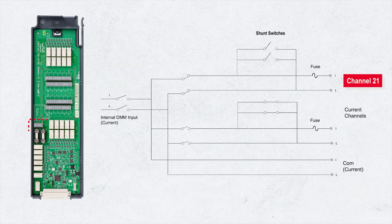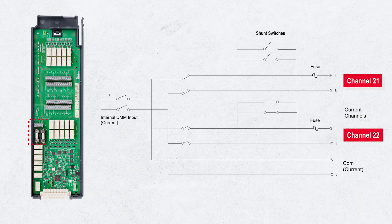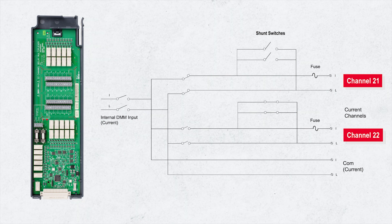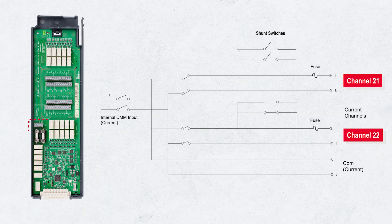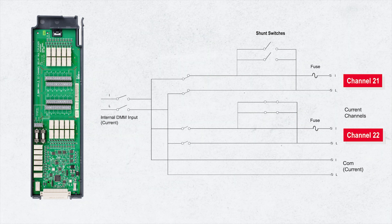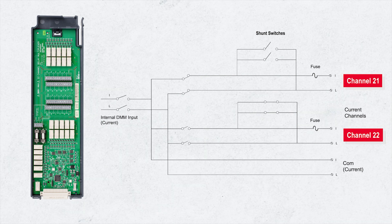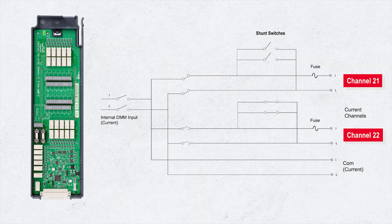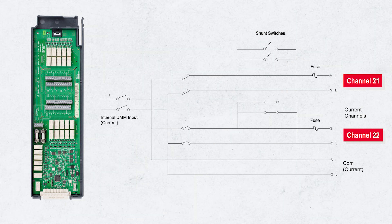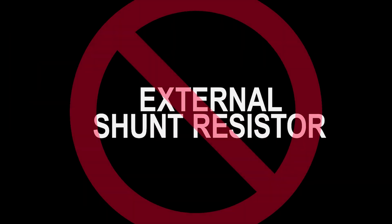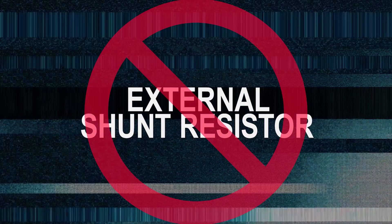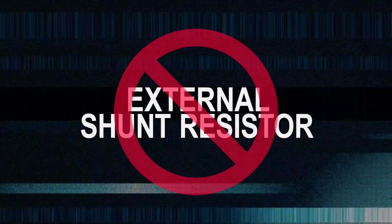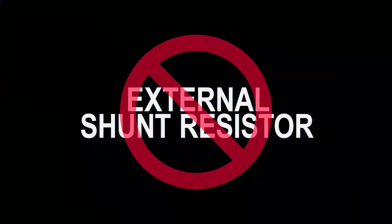The DAQM901A multiplexer module has two channels for current measurement, channels 21 and 22. There is a built-in shunt resistor in the internal DMM of the DAQ-970A and DAQ-973A mainframe. Therefore, users do not need external shunt resistors for current measurements.